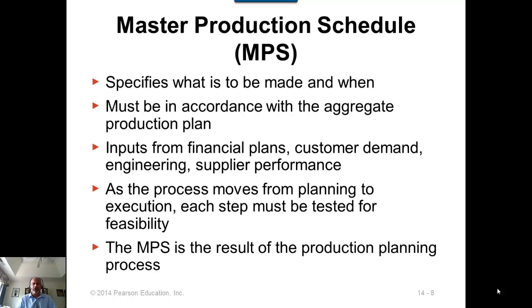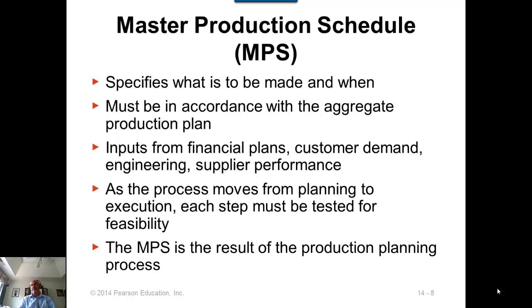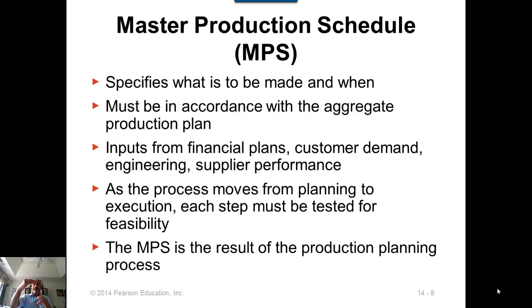Now let's talk about the master production schedule, the first prerequisite. It specifies what is to be made and when, for the independent demand item. So the master production schedule is a production schedule of the end item — the final item sold to customers. The master production schedule quantities must be consistent with the aggregate production plan discussed in chapter 13.